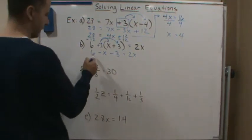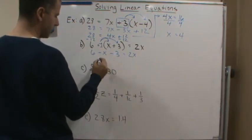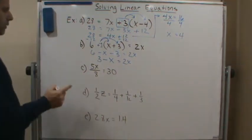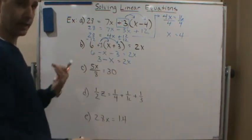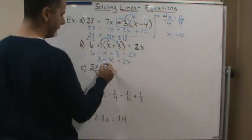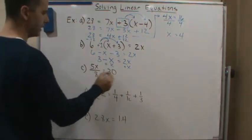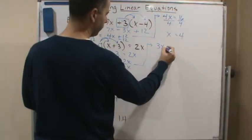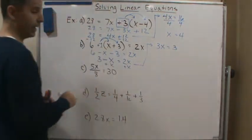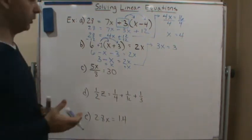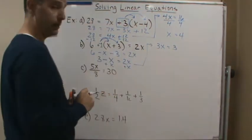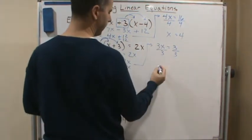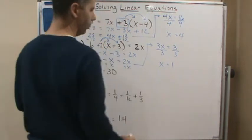Now combine like terms: 6 minus 3 is 3, so we get 3 minus x equals 2x. Now we move variable terms to one side and constants to the other — I'm going to add x to both sides, which gives me 3 equals 3x. I divide both sides by 3: 3 divided by 3 is 1, so x equals 1.